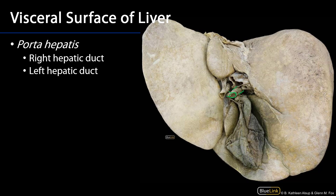This is in a region on the visceral surface of the liver known as the porta hepatis. That is where not just the elements of the biliary tree, but also the hepatic portal vein and